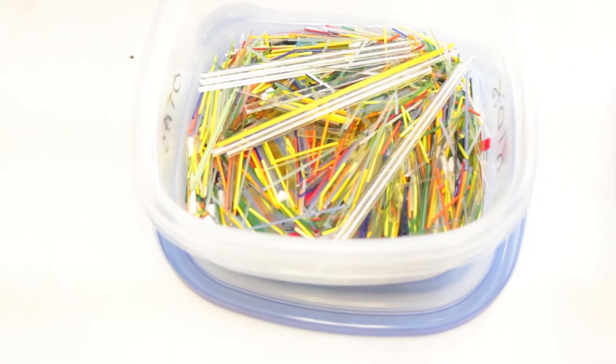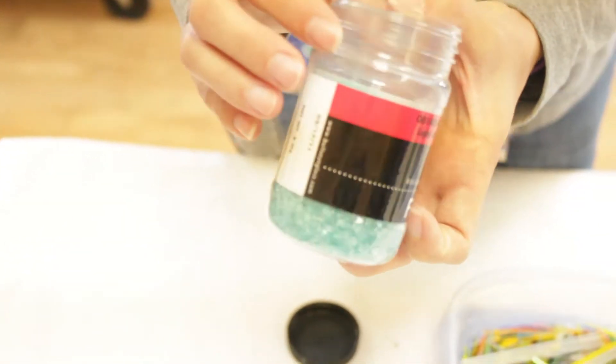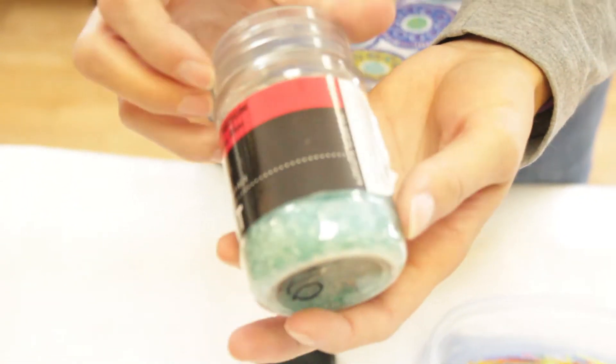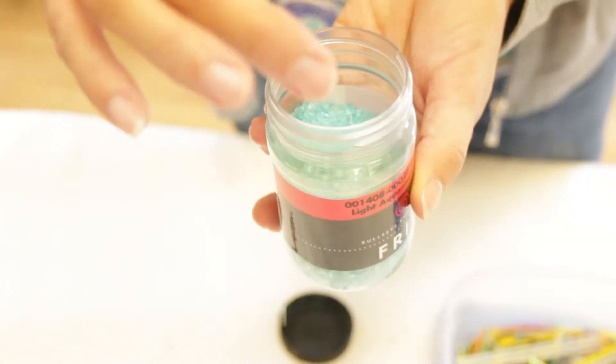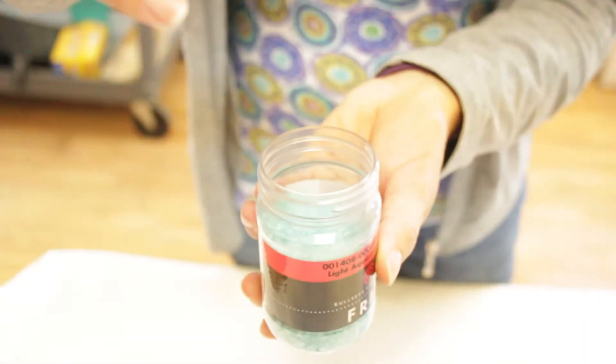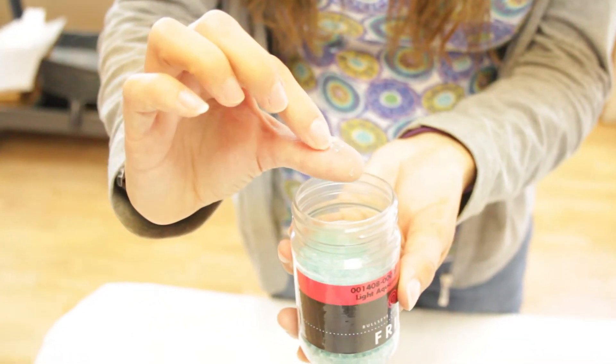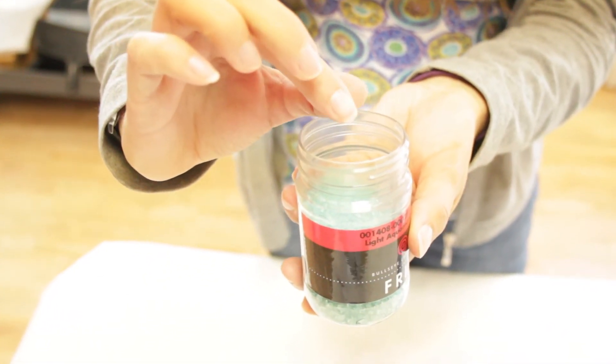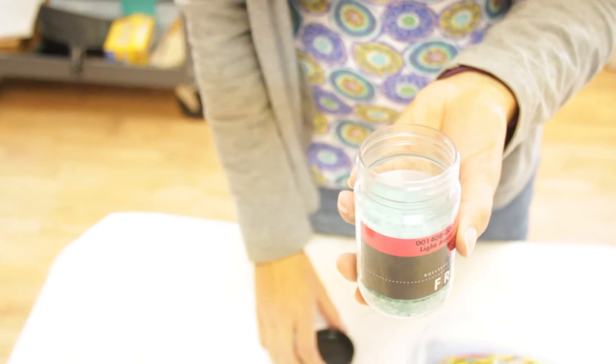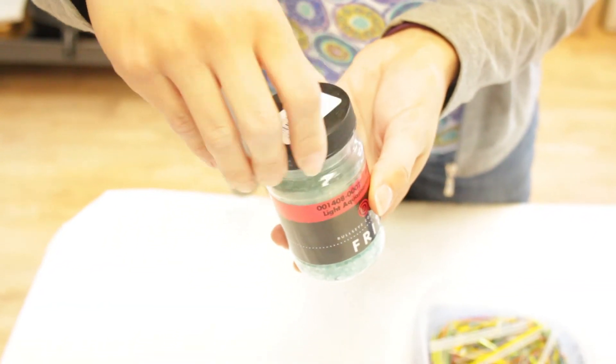Last thing I'm going to introduce, this is frit. This is little chopped up pieces of glass. And you can take just a sprinkle of these, you're going to apply a little bit of glue, and you can just kind of sprinkle them onto your piece when you're done. And these come in all types of colors.